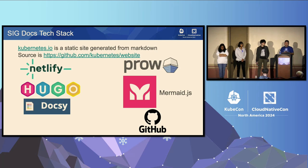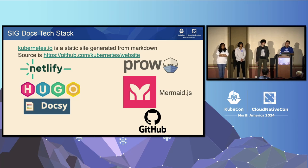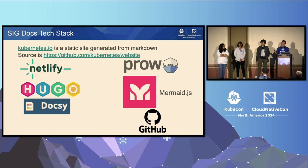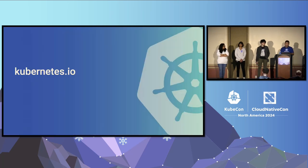We do have a tech stack, and we have great tech leads along with Zandri, Kat, and Ximing. Kubernetes.io is a static site, so everything is in Markdown and stored on GitHub at github.com/kubernetes/website. Our platform is Netlify, which builds from GitHub. The framework is Hugo, and our theme for Hugo is Docsy, which is very specific for tech docs. We use the same CI/CD system Kubernetes uses, which is Prow, and to dynamically generate charts and graphs, we use mermaid.js.